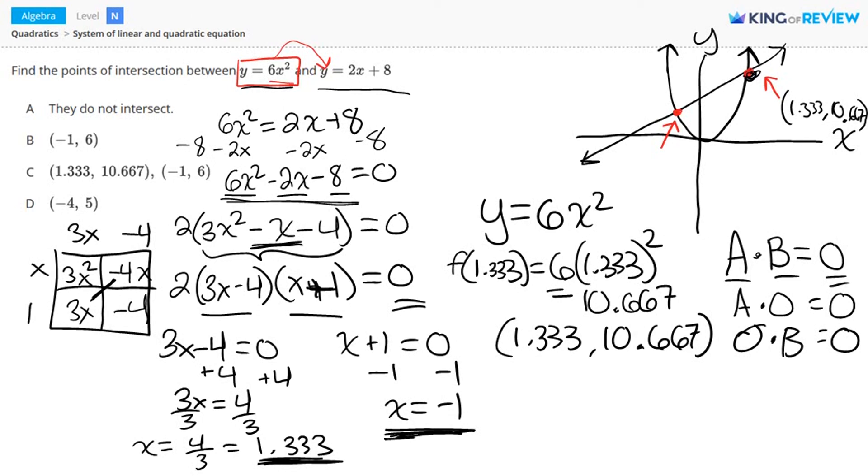Now let's use the other value for x. Plugging that into the same equation, I have f of negative 1 equals 6 times negative 1 squared. And this equals 6. So I have another point of intersection at negative 1, 6. So that could be this point here. So the coordinate is negative 1, 6. So letter C is correct. Thanks for watching.